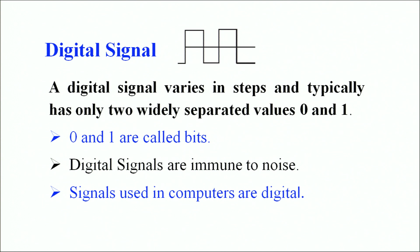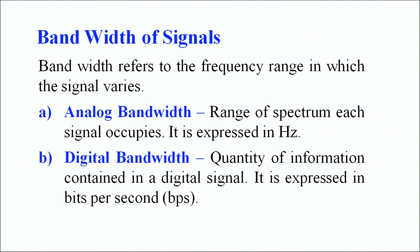When we talk about the bandwidth of a signal, bandwidth refers to the frequency range in which the signal varies. Analog bandwidth is defined as the range of spectrum which each signal occupies and it is expressed in terms of hertz. When we deal with digital signals, we talk about digital bandwidth — the quantity of information contained in a digital signal is measured by digital bandwidth and expressed in bits per second. These terms are very common today — data given in the form of MBPS (megabits per second) or GBPS (gigabits per second).